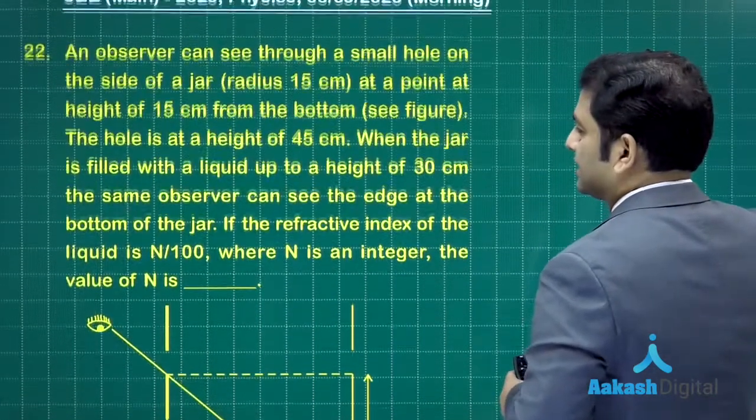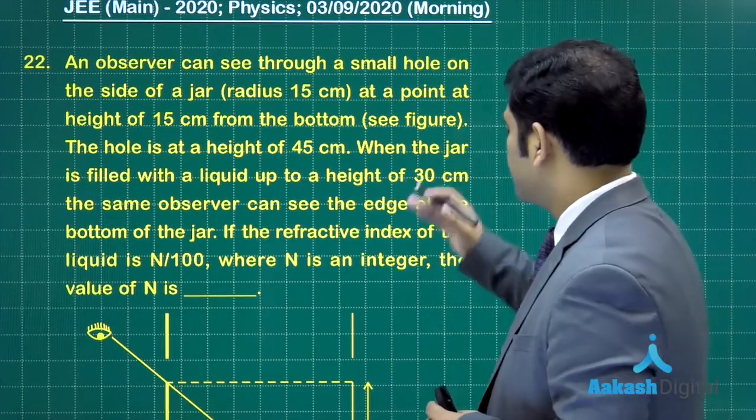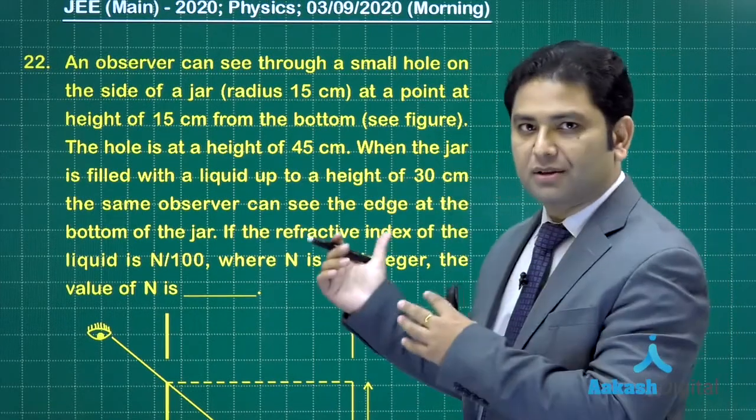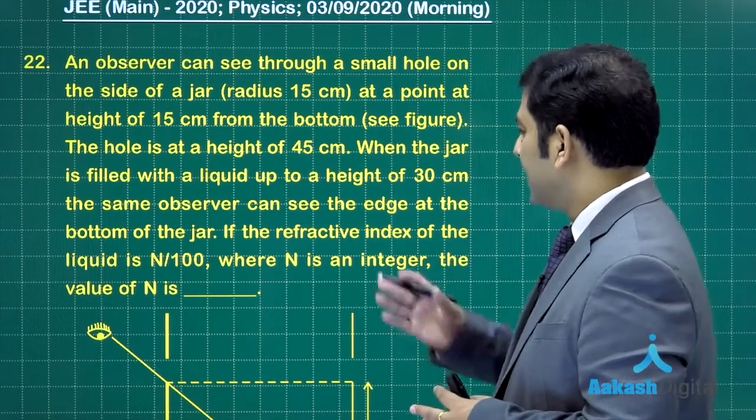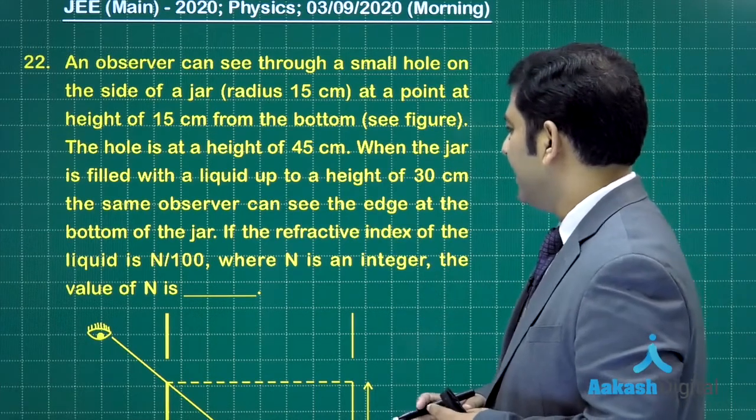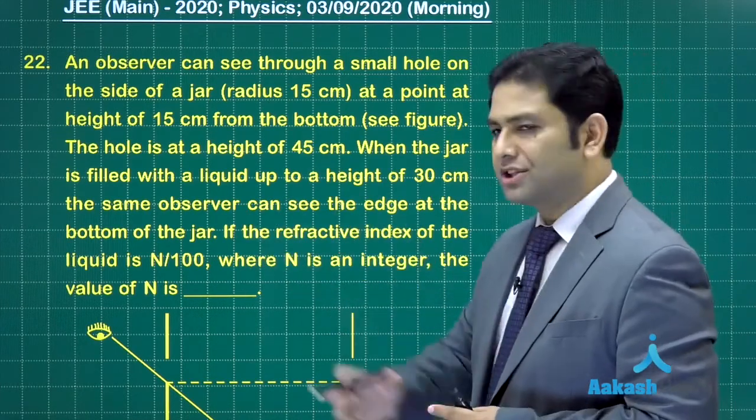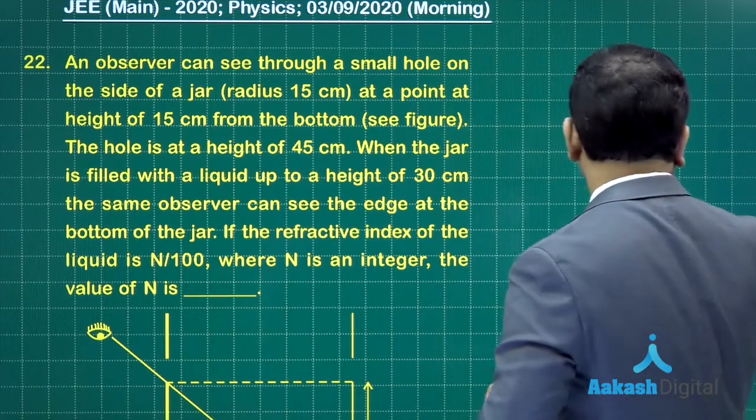The question says when the liquid is filled up to a height of 30 centimeters, we'll show that. Now the same observer can see the edge at the bottom of the jar. So it's something like this.